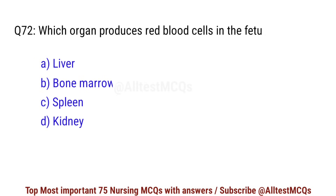Question number 72. Which organ produces red blood cells? Right option is A: Bone marrow.